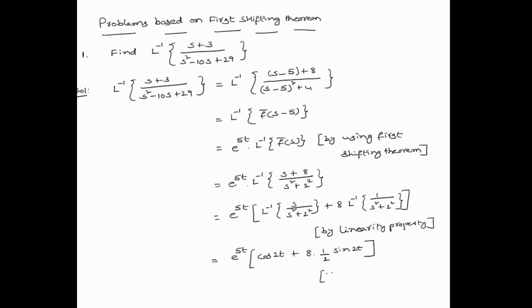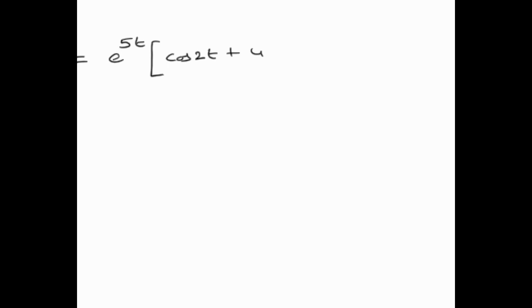Since L⁻¹{S / (S² + a²)} = cos(at) and L⁻¹{1 / (S² + a²)} = (1/a) sin(at), this equals e^(5t) into (cos 2t + 4 sin 2t). So finally, the inverse Laplace transform of (S + 3) / (S² - 10S + 29) is e^(5t) (cos 2t + 4 sin 2t).